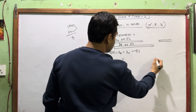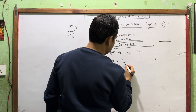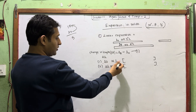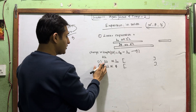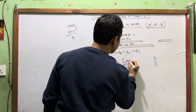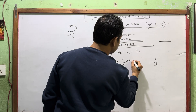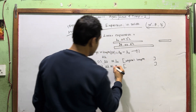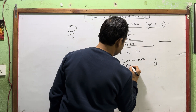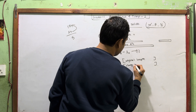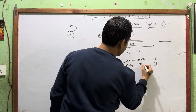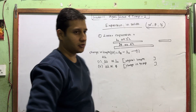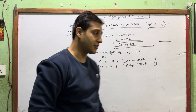So you can see this: one is the original length and the other is the change in temperature. You can see this in a shortcut.